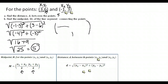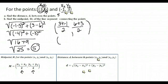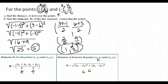It doesn't matter which number you put first. So we go: three plus negative one, divided by two for our x; and six plus three, divided by two for our y. Three plus negative one is two over two, which equals one. Six plus three is nine over two, which we leave as nine halves. So the distance was 5 and the midpoint was the point (1, 9/2).